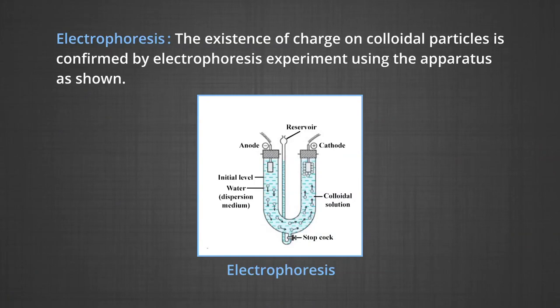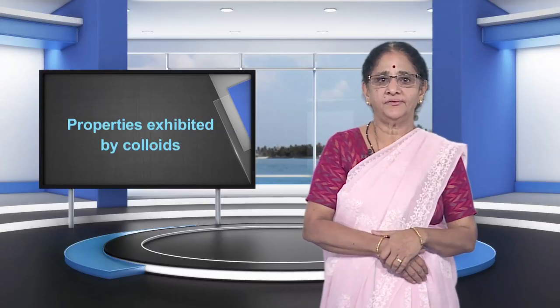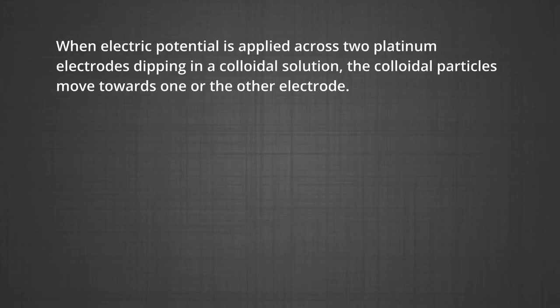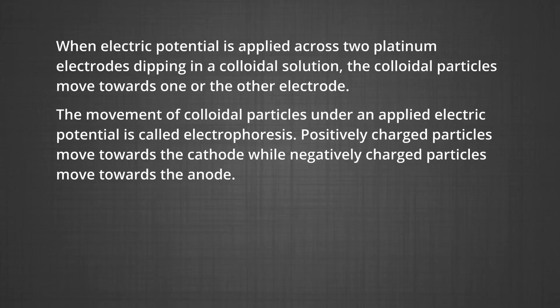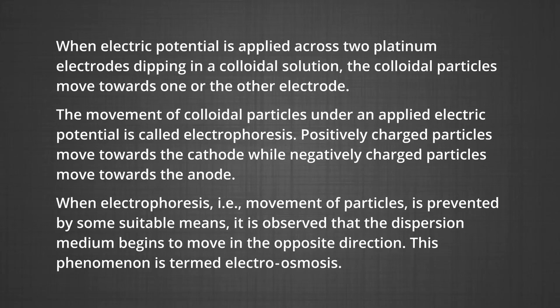Number three, electrophoresis. The existence of charge on colloidal particles is confirmed by the electrophoresis experiment. When an electric potential is applied across two platinum electrodes dipping in a colloidal solution, the colloidal particles move towards one or the other electrode. The movement of colloidal particles under an applied electric potential is called electrophoresis. Positively charged particles move towards the cathode, while negatively charged particles move towards the anode. When electrophoresis — that is, the movement of particles — is prevented by some suitable means, it is observed that the dispersion medium begins to move in the opposite direction. This phenomenon is termed electro-osmosis.